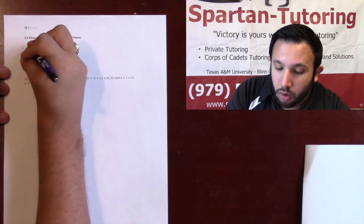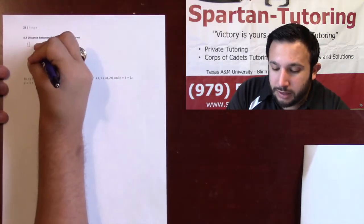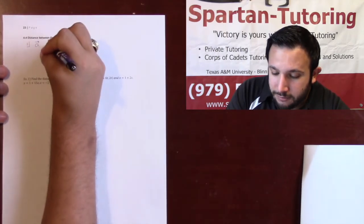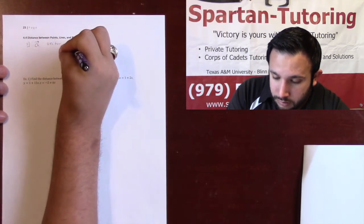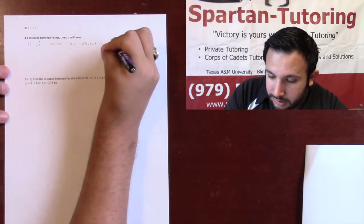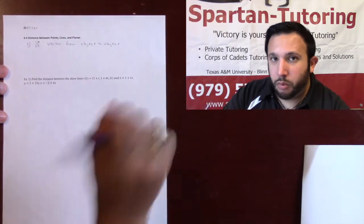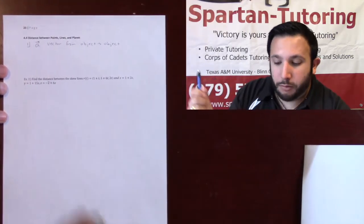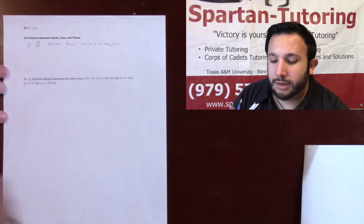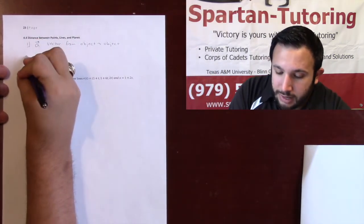The first thing I'm always going to do when looking for the distance between two objects is find vector A. Vector A is a vector from one object to the other. If you have a point and a line, you find a vector from the point to any point on the line. If you have a point and a plane, you draw a vector from the point to the plane, and so forth.